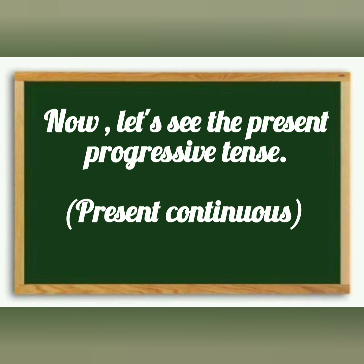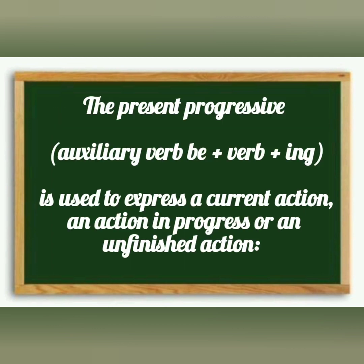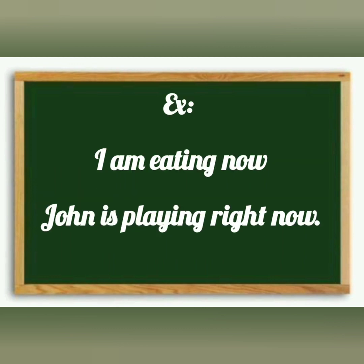Now let's see the present progressive tense. The present progressive tense is used to express an action in progress or an unfinished action. Example: I am eating now. John is playing right now.